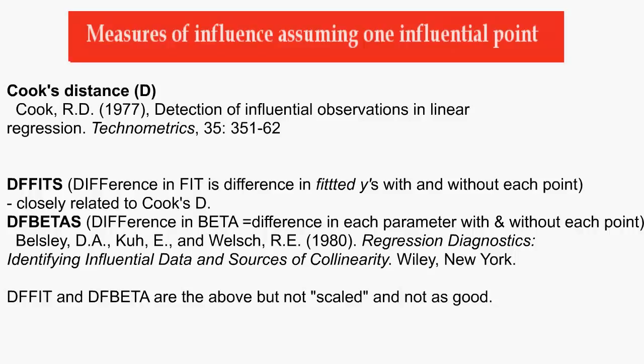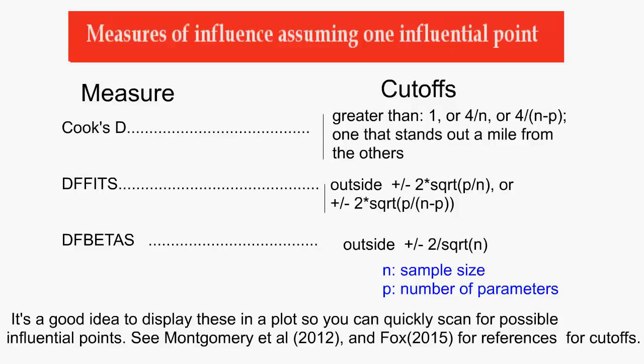When the measures are big, then we go to step two in the analysis. How big is big? It's important to note that these measures are not test statistics. There is no null hypothesis, no critical values, no having to reject the null at the 5% significance level. Instead, a number of cut-off values for each measure have been proposed, and when the measures exceed the cut-offs, then it's deemed big. Cut-offs that depend on the sample size are recommended. Cut-offs are guidelines, not strict rules — there's no need to be too precise on this. For Cook's Distance, take your pick from one of the following: greater than 1, or 4 divided by the sample size, or 4 divided by the sample size minus the number of parameters including intercepts, or one that stands out a mile from the others.